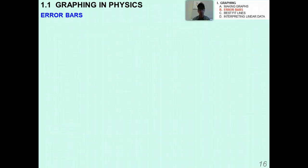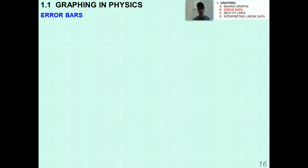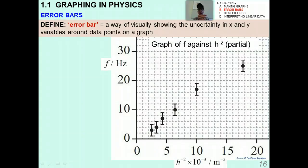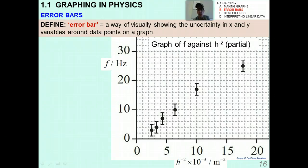One of the most important things we're going to talk about in this section — somewhat unique to the IB in terms of how we treat it — is error bars. If you had me in grade 10 physics you'll remember we talked about error bars. An error bar is simply a way of visually showing the uncertainty in X and Y variables around data points on a graph. Error bars convey a lot of information about your uncertainties and errors.